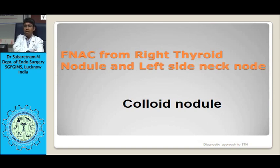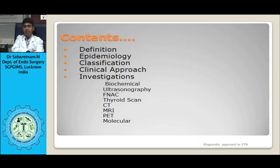A solitary thyroid nodule is defined as a discrete lesion within the thyroid gland that is radiologically distinct from the surrounding thyroid parenchyma. Clinically you might have a single nodule, but if on ultrasound you find a small nodule in the other lobe also, then that is not a solitary thyroid nodule.